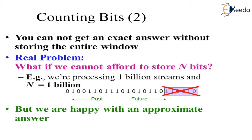What is the real problem? What if we cannot afford to store n bits? If we are representing 1 billion streams and n equals 1 billion, we have so many bits. We cannot know the bits coming from the future, because bits are continuously arriving. So we can only calculate up to the current point. This means the answer will be approximate — but we are happy with approximate answers, not exact ones.